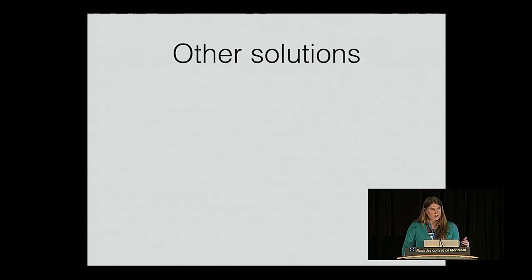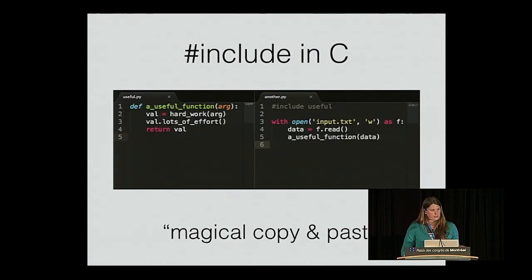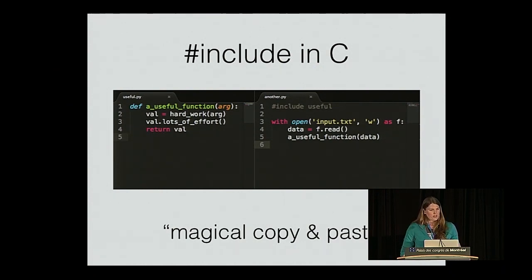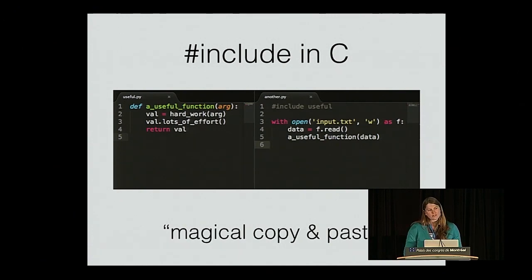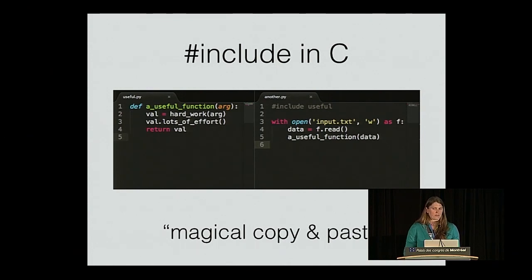We could have made different decisions at all of these different points. Let's take a quick look at some solutions in other languages. The first one is pound-include in C, which was one of Guido's inspirations, especially in terms of the path for loading. It's somewhat similar to what we were calling magical copy and paste at the very beginning — paste in the code from the included file before compiling the main file. C avoids many of the downsides we observe in Python because C is not a dynamic language, so it can use linkers and compiler optimizations.